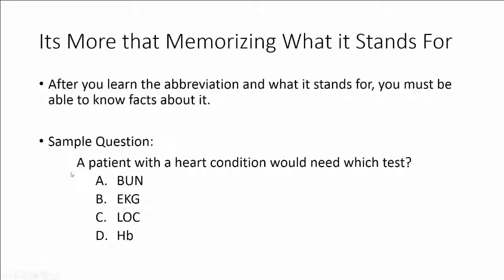So this would be a sample question. A patient with a heart condition would need which test? So you would need to be able to understand heart condition and which of the following tests relate to the heart. BUN measures the blood urea nitrogen, this assesses kidney function. And EKG, which also stands for ECG, measures the heart. So that is probably our answer.